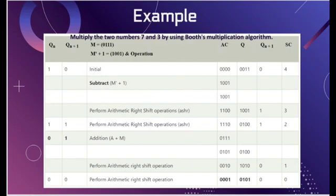We again check the last digit of Q and Q(n+1). We find Q and Q(n+1) are 0 and 1, so we perform addition: A plus 7 (0111). We carry out the addition and record the result, then proceed to the next cycle.